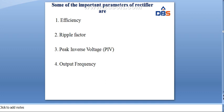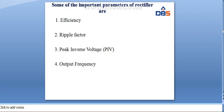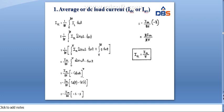The important parameters of the rectifier are efficiency, ripple factor, peak inverse voltage, and output frequency. First, we will find the DC current or average current (I_dc). In the half-wave rectifier, I_dc = (1/2π) × ∫₀²π i_L dωt. Here, i_L = Im·sin(ωt).